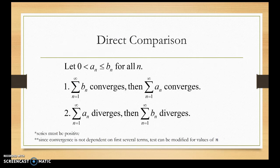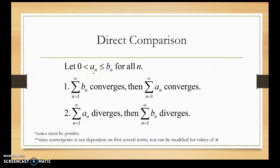The first one is direct comparison. So we have two series, both positive, and we have a sub n. One series is less than or equal to the other series for all n. If b sub n — the larger series — converges, then the smaller series will converge. And if the smaller series diverges, then the larger series will diverge as well.